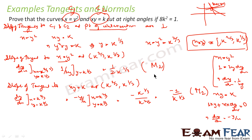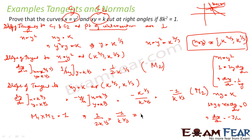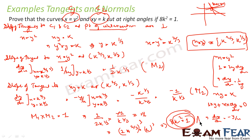Now I have to prove that these tangents are perpendicular. If two lines are perpendicular, the product of their slopes must equal −1. So m1 × m2 = [1/(2k^(1/3))] × [−1/k^(1/3)] = −1/(2k^(2/3)) = −1. This gives 1/(2k^(2/3)) = 1. Cubing both sides: 1/8k² = 1, so 8k² = 1. That is what I had to prove.